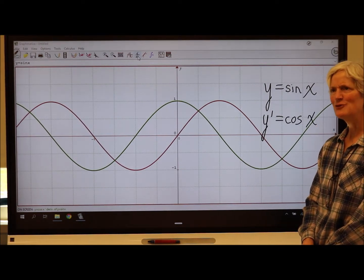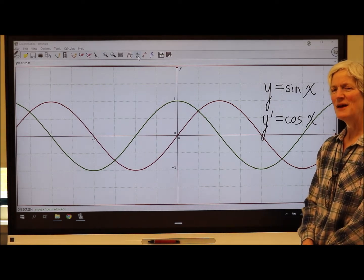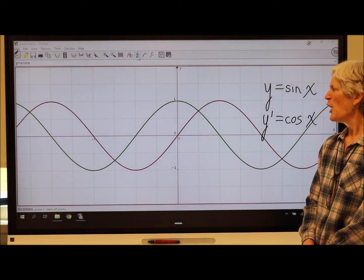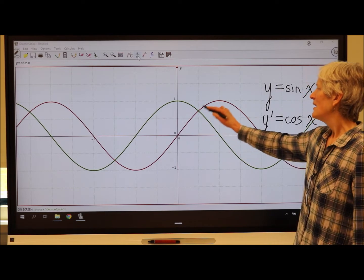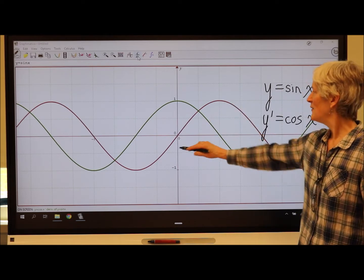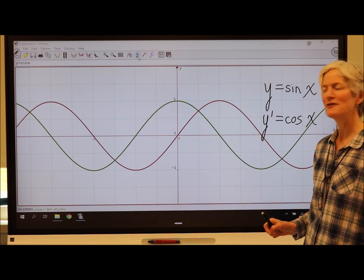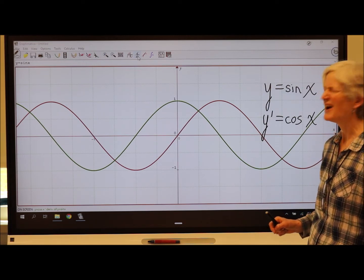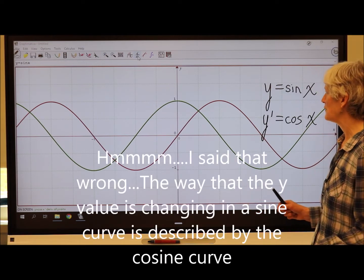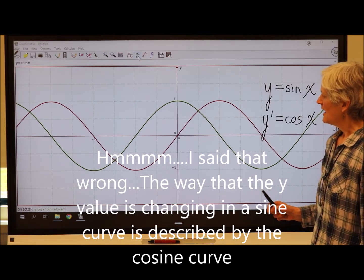Wow. Interesting. Kind of makes sense if you think about it. The way that the slope is changing is described by a cosine curve. How cool.